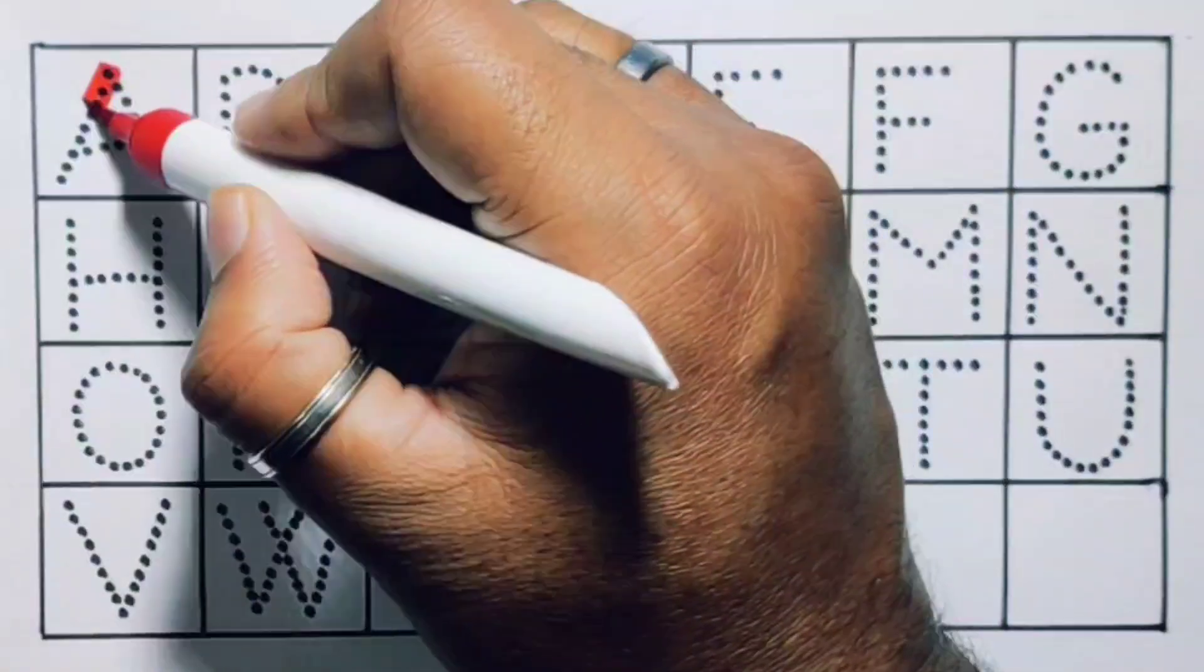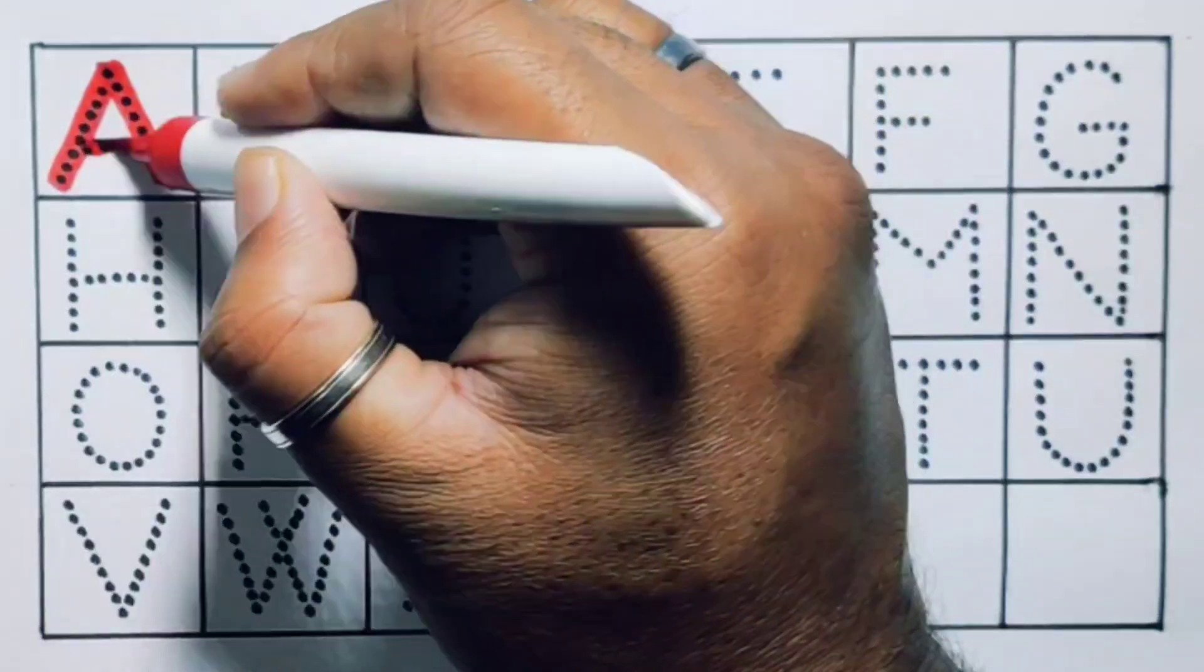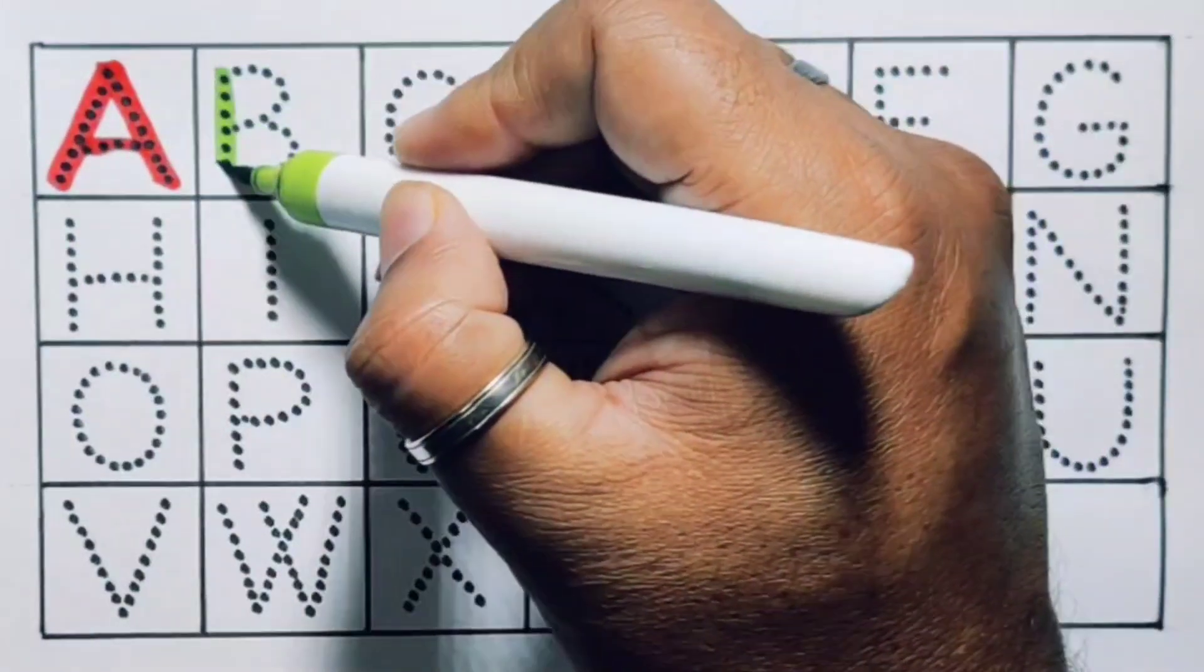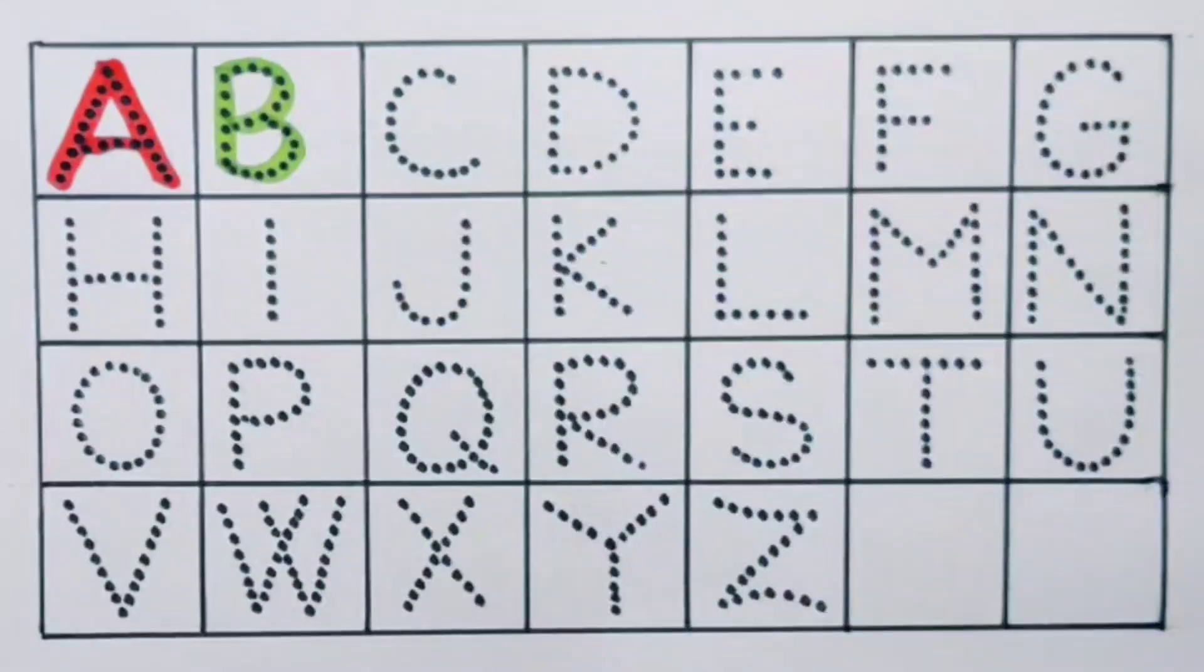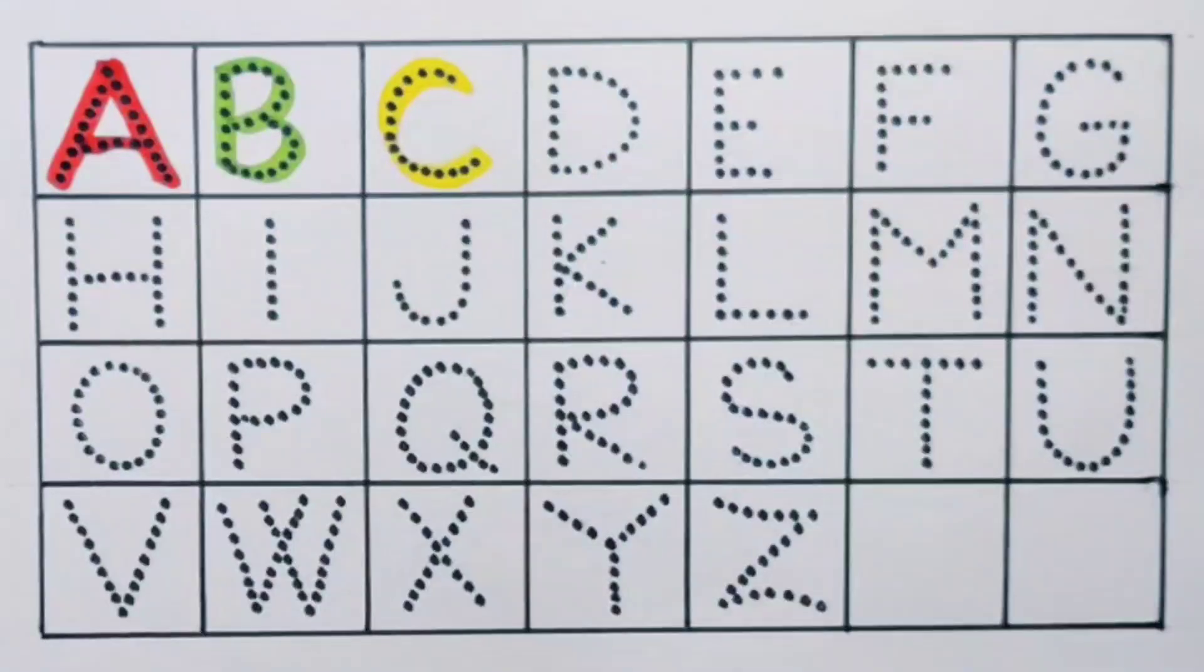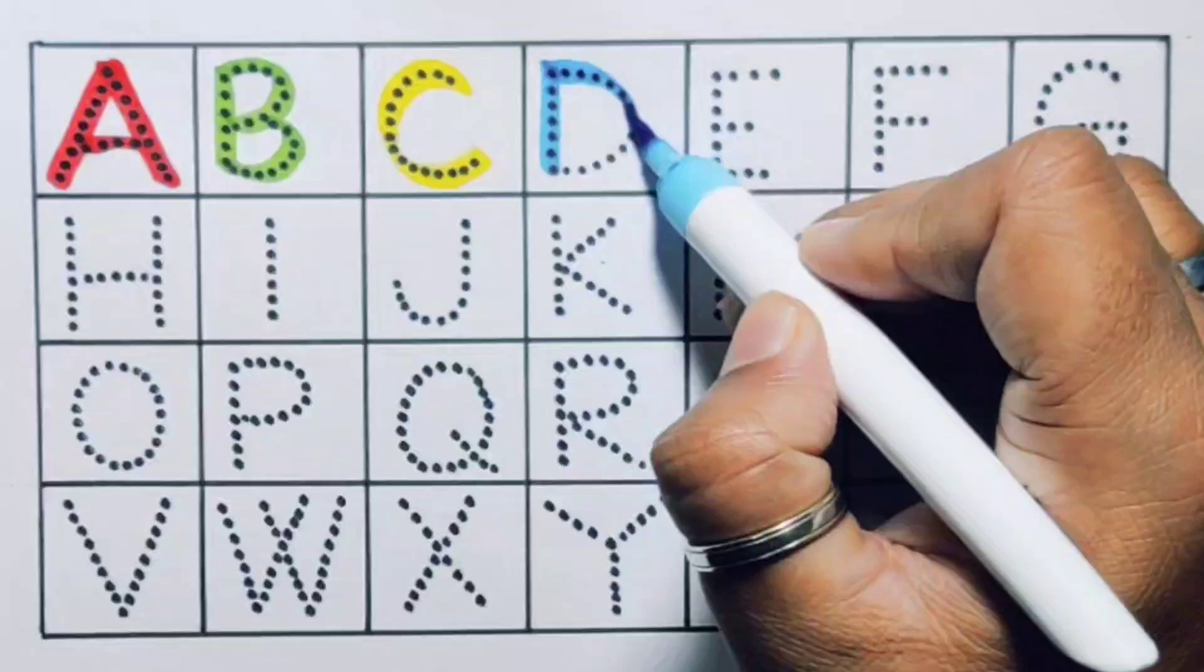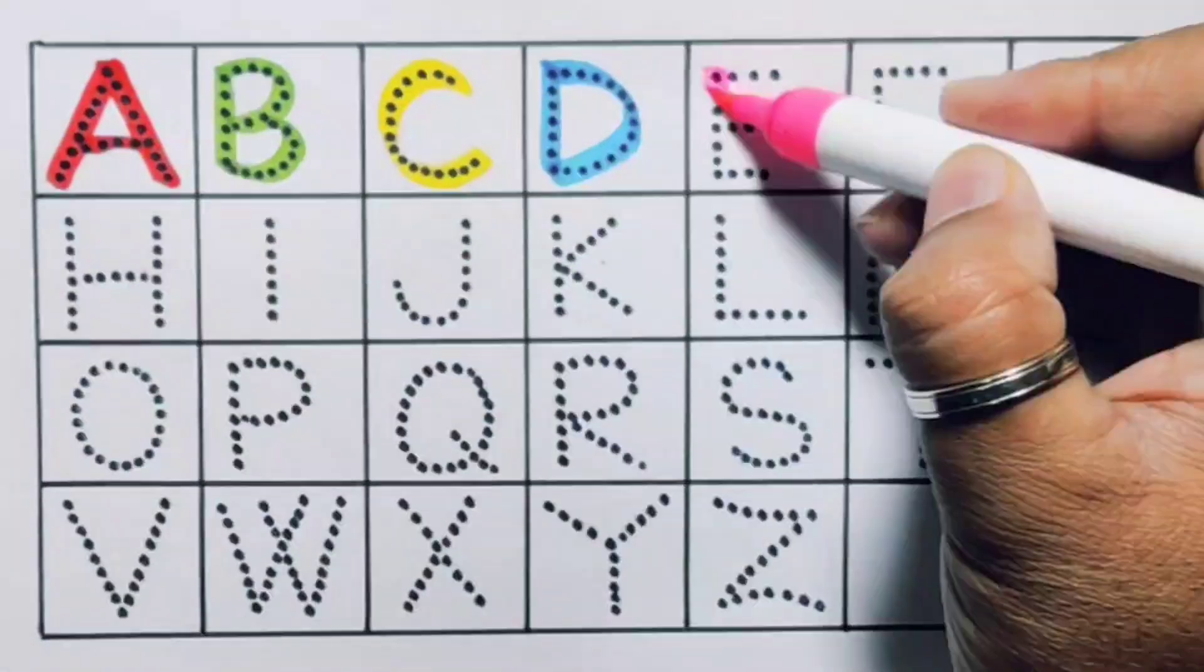First, A, A for aeroplane. Next kids, B, B for butterfly. Next, C, C for caterpillar. Next, D, D for doctor. Next, E, E for eye.